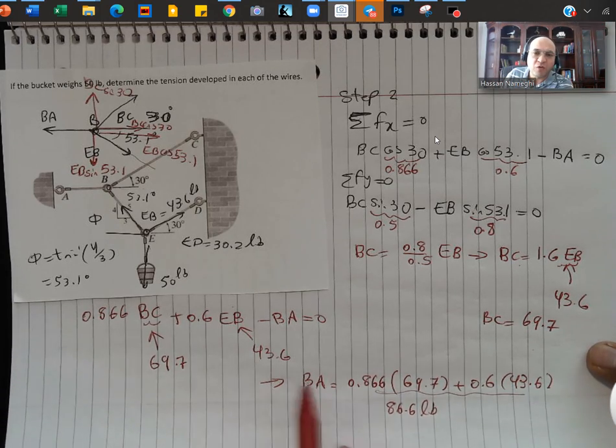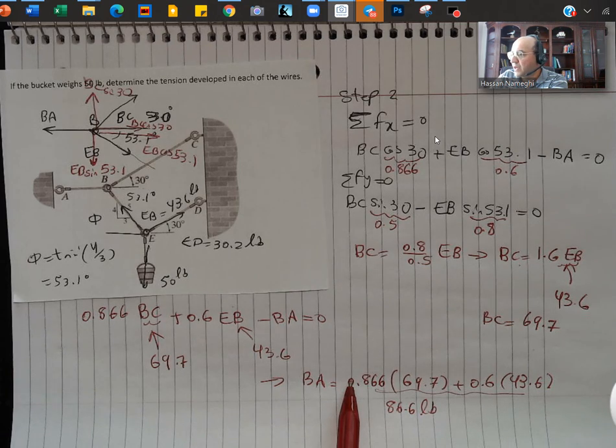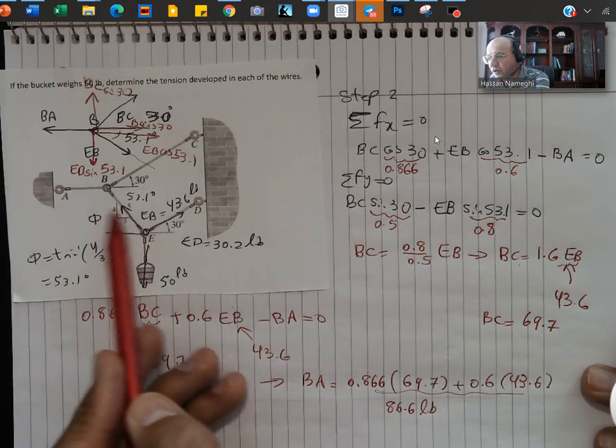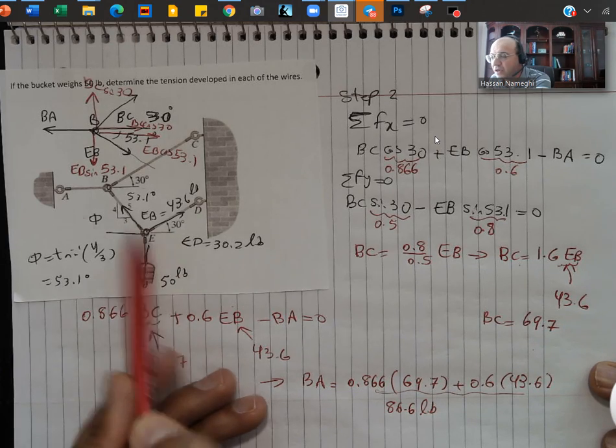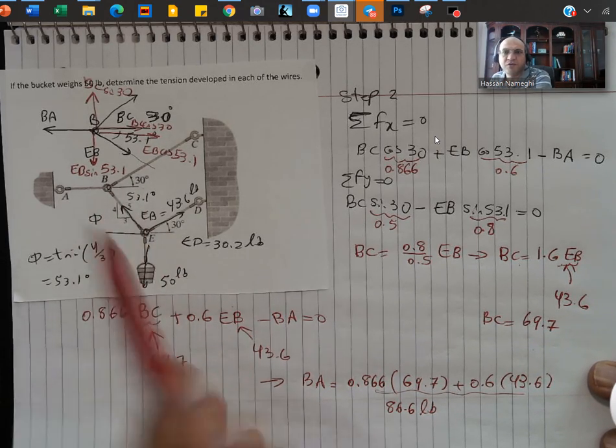So we found all the forces. We found all four forces which were involved in this problem. Again, this problem was a little bit more complex involving many parts. One part was to find these two forces. We did one free body diagram for this. Then we did the second free body diagram to find the remaining two forces.